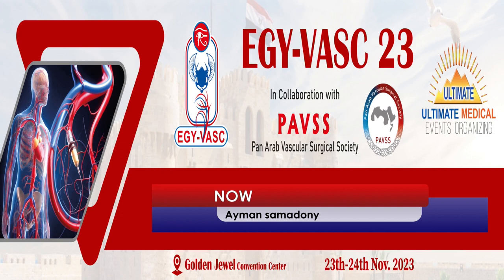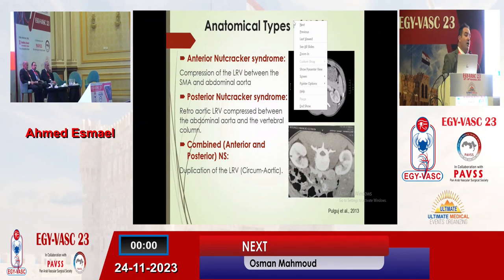Nutcracker syndrome is the compression of the left renal vein with symptoms. If without symptoms, we call it Nutcracker phenomenon. We have different types of Nutcracker syndrome. We have anterior Nutcracker syndrome in which the left renal vein is compressed between the superior mesenteric artery and the aorta. Posterior Nutcracker syndrome in which the left renal vein is compressed between the aorta and the vertebral bodies. We also have a combined type, anterior and posterior — we call it duplicate left renal vein or circum-aortic.